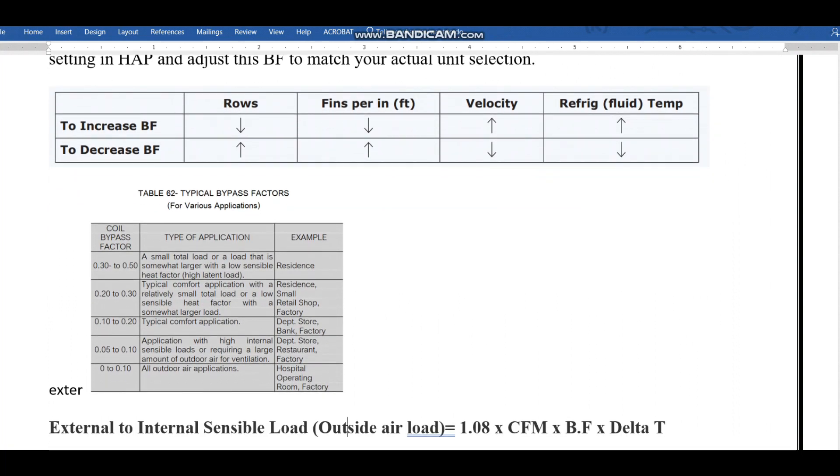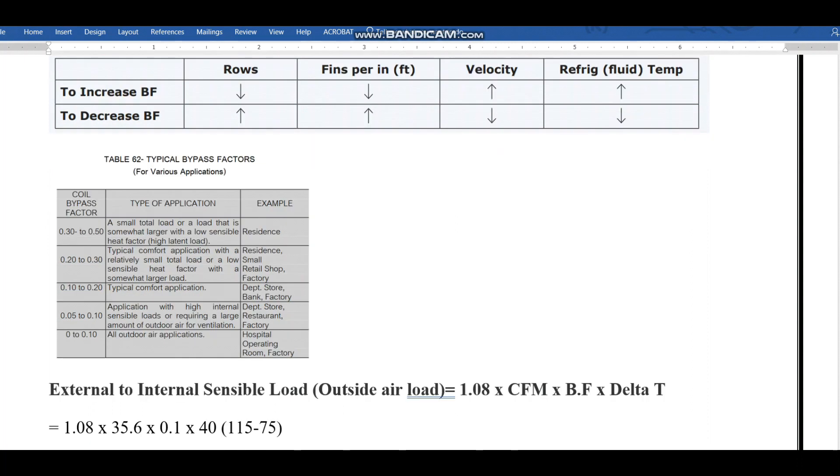The reference for this table is Carrier handbook. In this table, the bypass factors are given for different applications. For example, hospital operating room bypass factor will be very low, 0 to 0.1. If you go to small retail shops, the bypass factor can be 0.2 to 0.3. Normally we consider 0.1 in the initial tender stage as a default bypass factor in the HAP calculation. Later stage we can modify based on the selection.